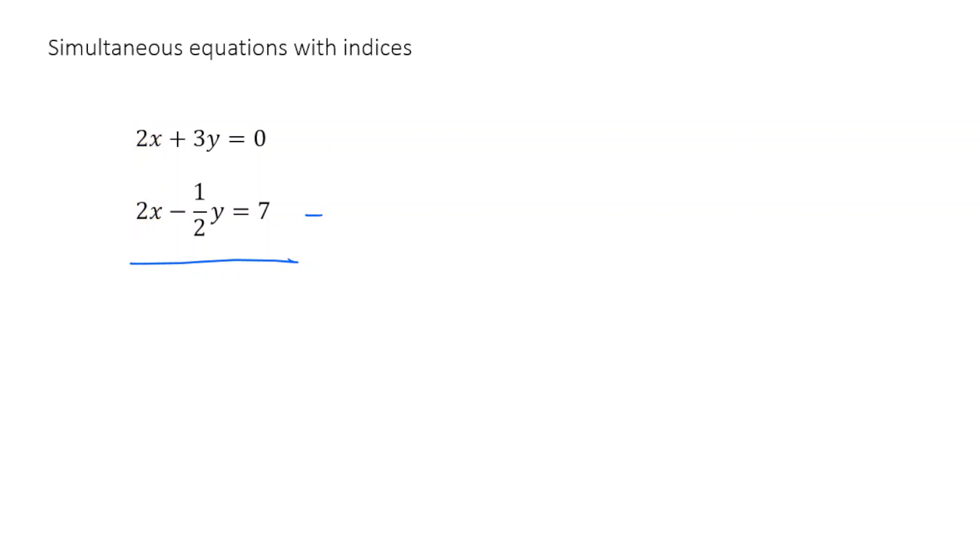So 2x minus 2x is 0. And 3y minus minus a half y is 3.5y. So sorry, plus 3.5y. And then 0 minus 7 is minus 7. So if I've got 3.5y is equal to minus 7, if I divide by 3.5, I'm going to get minus 2. So y is equal to minus 2.